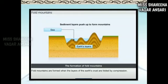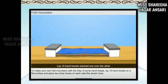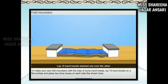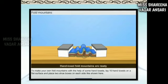You can make your own fold mountain with some hand towels. Lay 10 hand towels on a flat surface and place two shoe boxes on each side as shown, then push the shoe boxes towards the center. Your hand-towel fold mountains are ready — students, try this out!